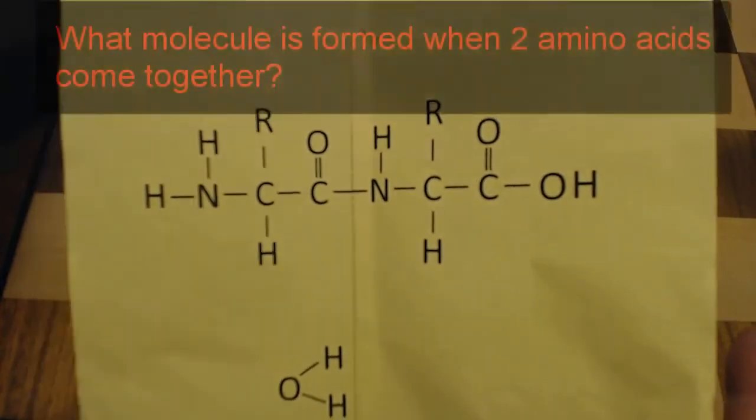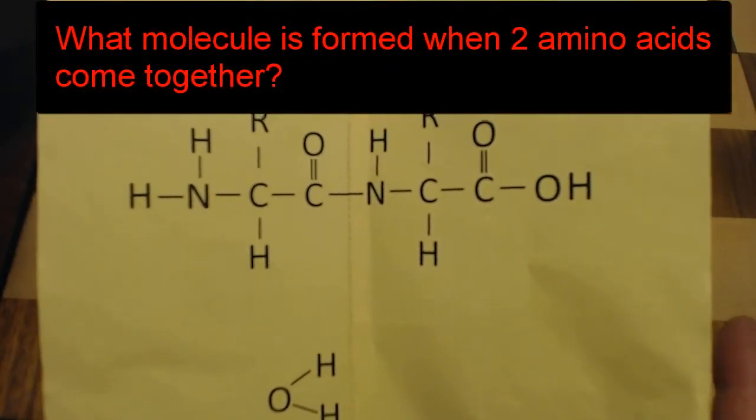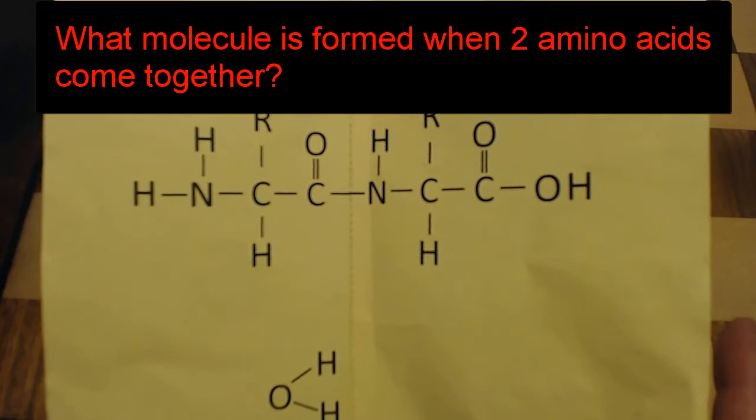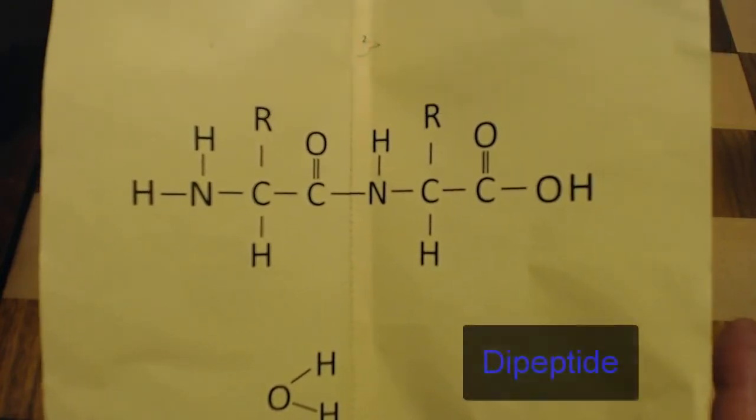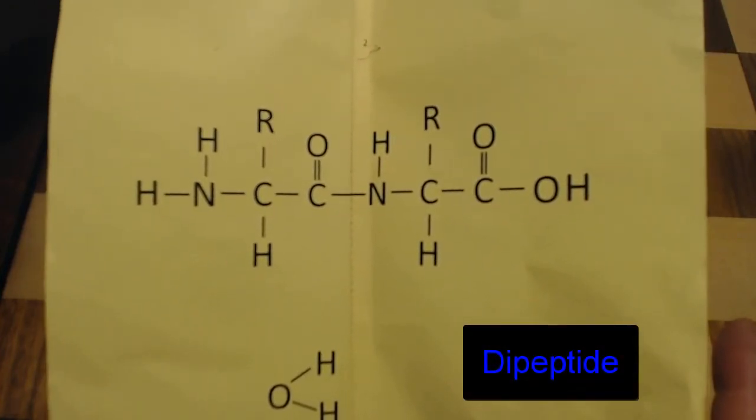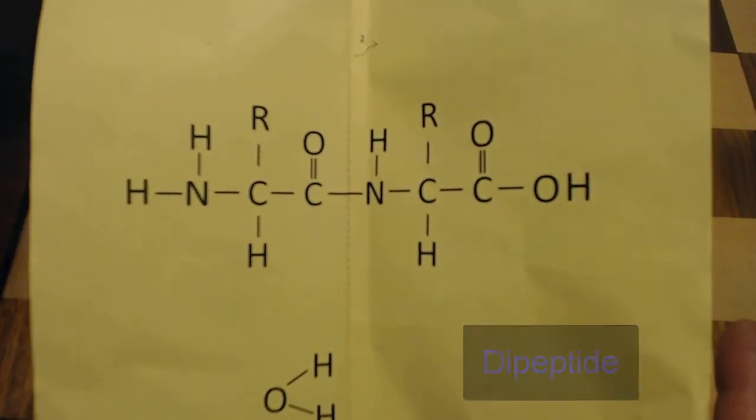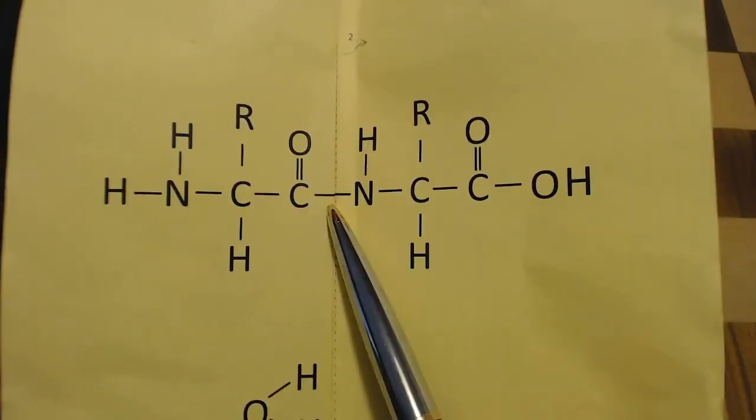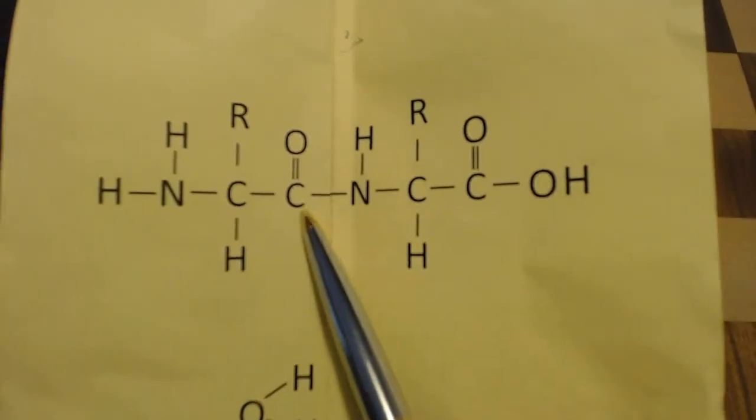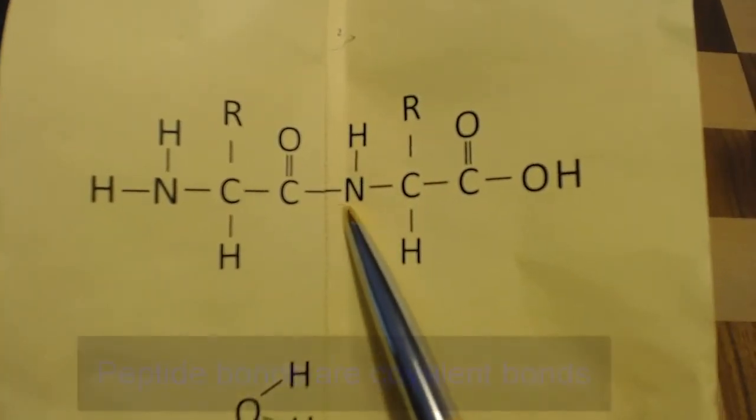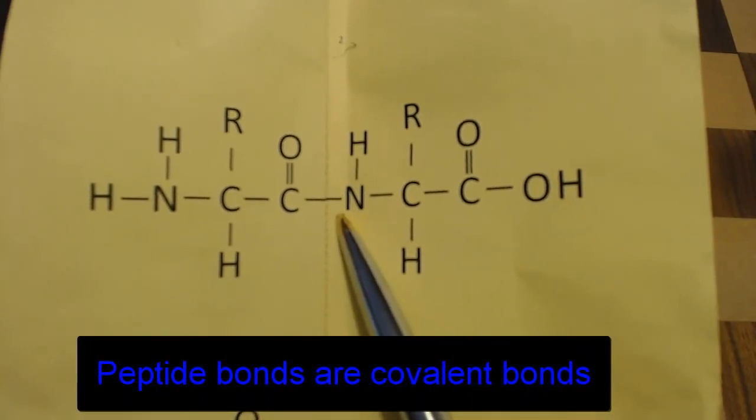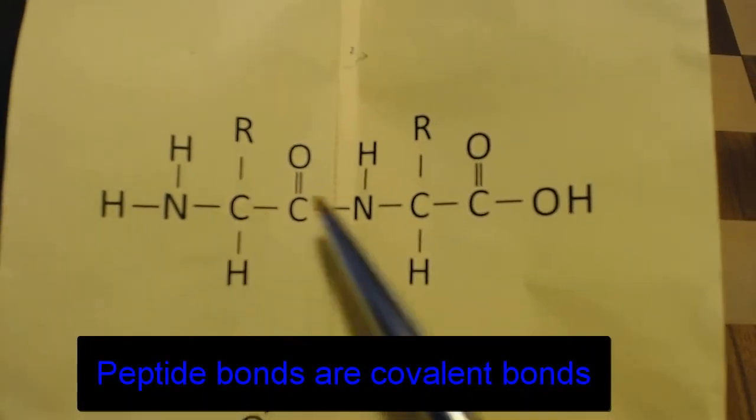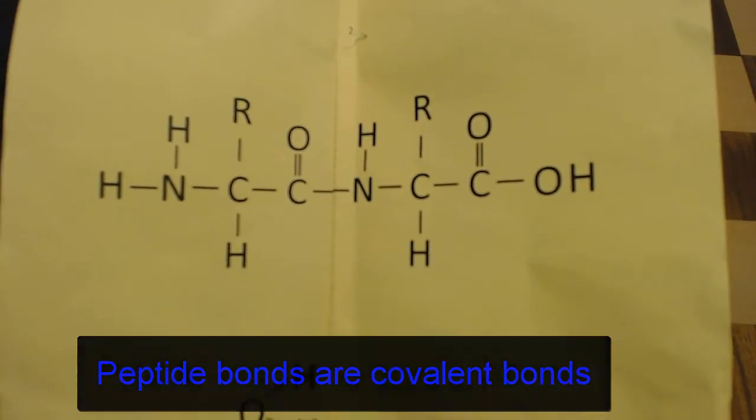Well we have our next question. What kind of molecule is formed when these two amino acids come together? If you guessed a dipeptide, you are absolutely correct. The reason they call it a dipeptide is because these two amino acids form this peptide bond. Peptide bonds are covalent bonds between two amino acids.